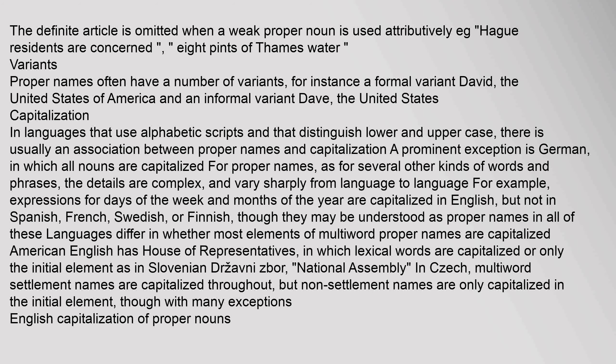In languages that use alphabetic scripts and distinguish lower and upper case, there is usually an association between proper names and capitalization. A prominent exception is German, in which all nouns are capitalized. For proper names, as for several other kinds of words and phrases, the details are complex and vary sharply from language to language. For example, expressions for days of the week and months of the year are capitalized in English, but not in Spanish, French, Swedish, or Finnish. Languages also differ in whether most elements of multiword proper names are capitalized — American English has House of Representatives with lexical words capitalized, while Slovenian only capitalizes the initial element.